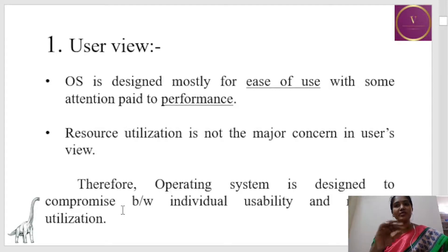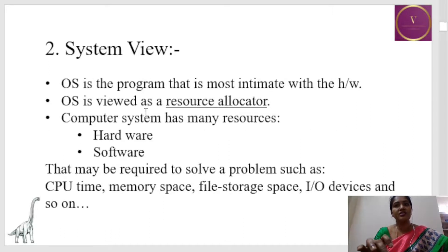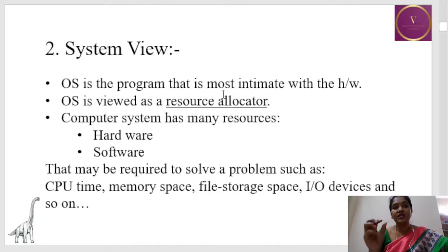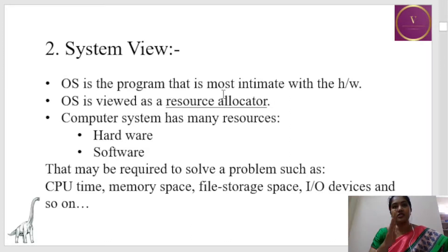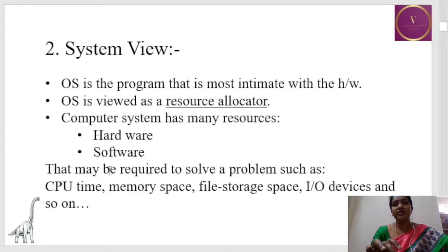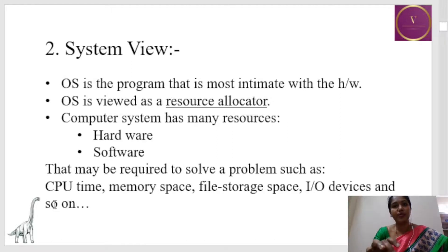From the system point of view, OS is the program that is very close to the hardware and it is viewed as the resource allocator. From the system point of view, OS should be using all the resources effectively — resources in the sense of hardware and software — and OS should be able to allocate space efficiently. What OS should manage from the system point of view includes CPU time, memory space, file management, I/O devices utilization — all these are the major concerns from the system point of view.